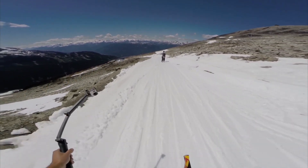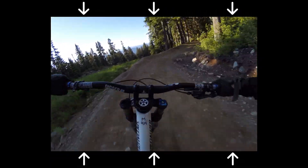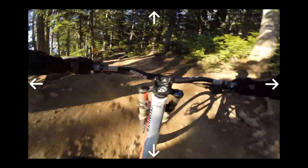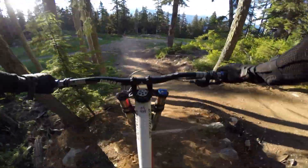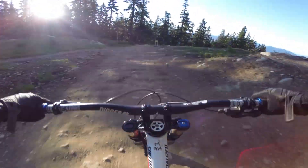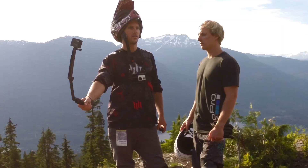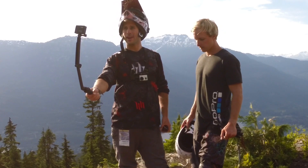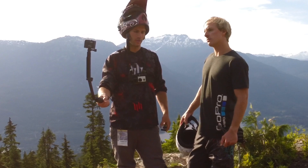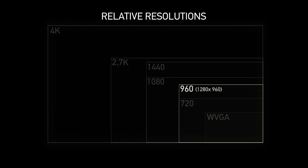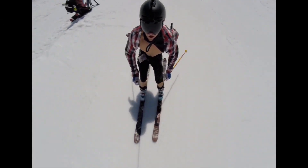Moving down the list, we've got 1080 Super View, a new mode for the Hero 3 Plus. It essentially takes 1440p and squishes it down into a 1080 file — it pinches the center so the center still looks normal and it's a little more skewed on the outsides. What this does is give you the top and bottom vertical view of 1440 but puts it into that standard 1080p mode. 1080p Super View is great for head cam, chest cam, or anything POV going straight in front of you.